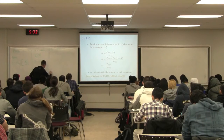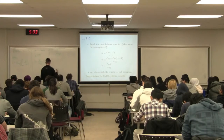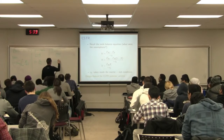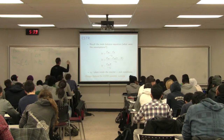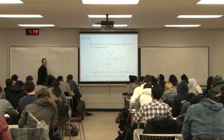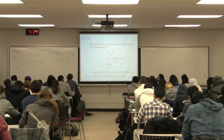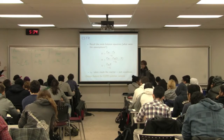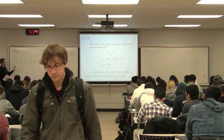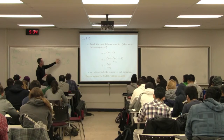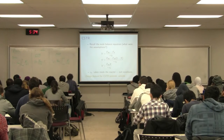For a plug flow reactor, we derived a more complicated formula. For the PFR, the volume equals the initial molar flow into that reactor, integrated from X equals zero to the final desired conversion, dX over minus RA. These are the three reactor systems: batch, CSTR, and PFR. They all represent very ideal properties under certain conditions, and all real reactors are some function of these.